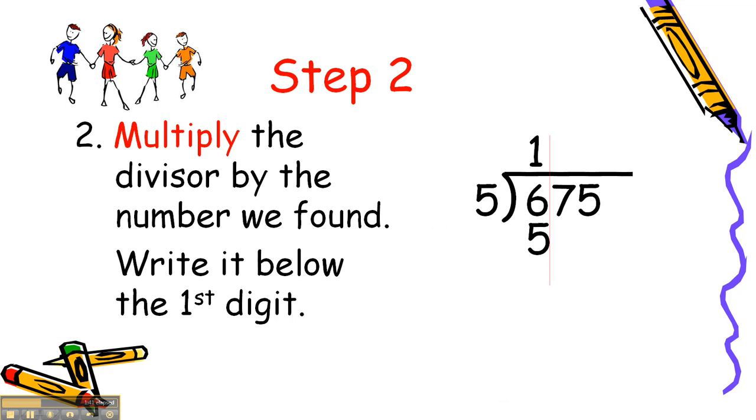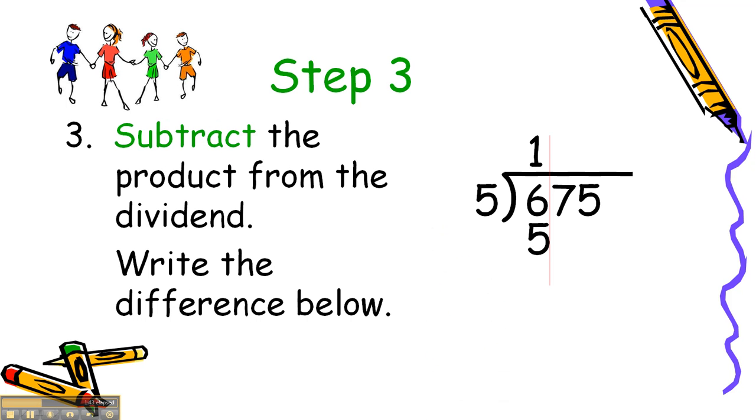We're ready for step 3. Sister, or subtract. Subtract the product from the dividend and write the difference below. We subtract 5 from 6 and we get 1. It's written below our problem.